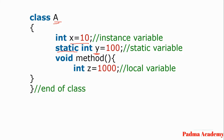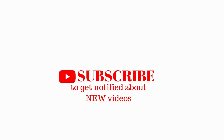The static variable y is also declared outside the method but inside the class. Any variable declared inside the method is called a local variable — that is z. This is all about variables in Java. In this video we have studied about instance variable, static variable, and local variable. Thank you for watching this video.